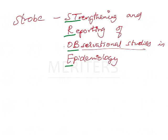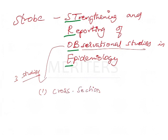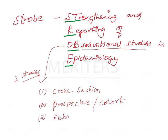Observational studies include three types: first, cross-sectional studies; second, prospective studies or cohort studies; and third, retrospective studies.